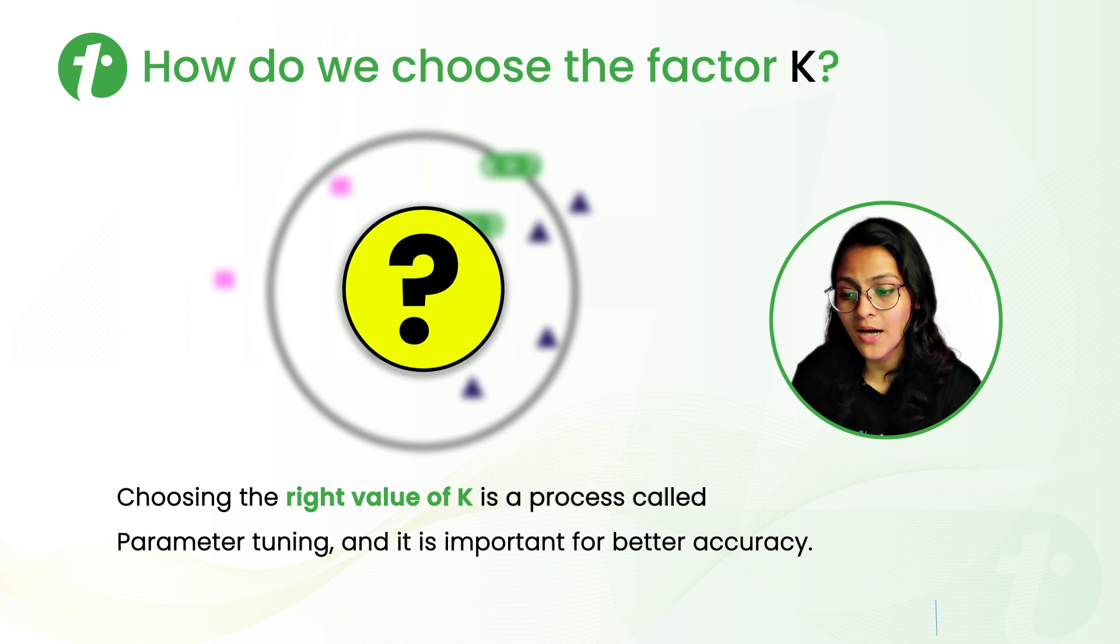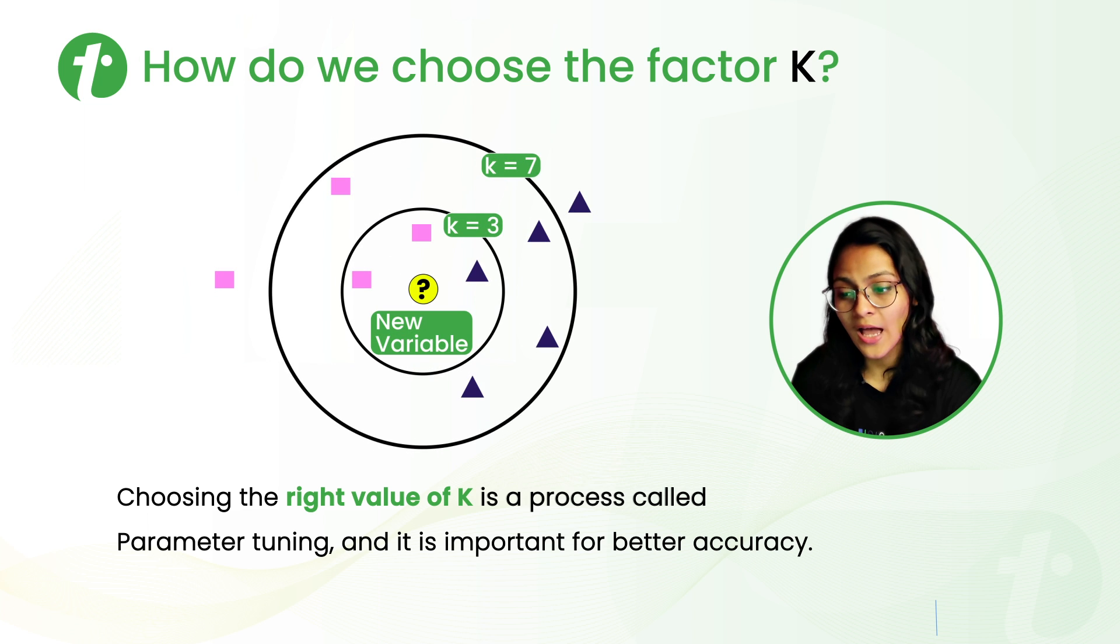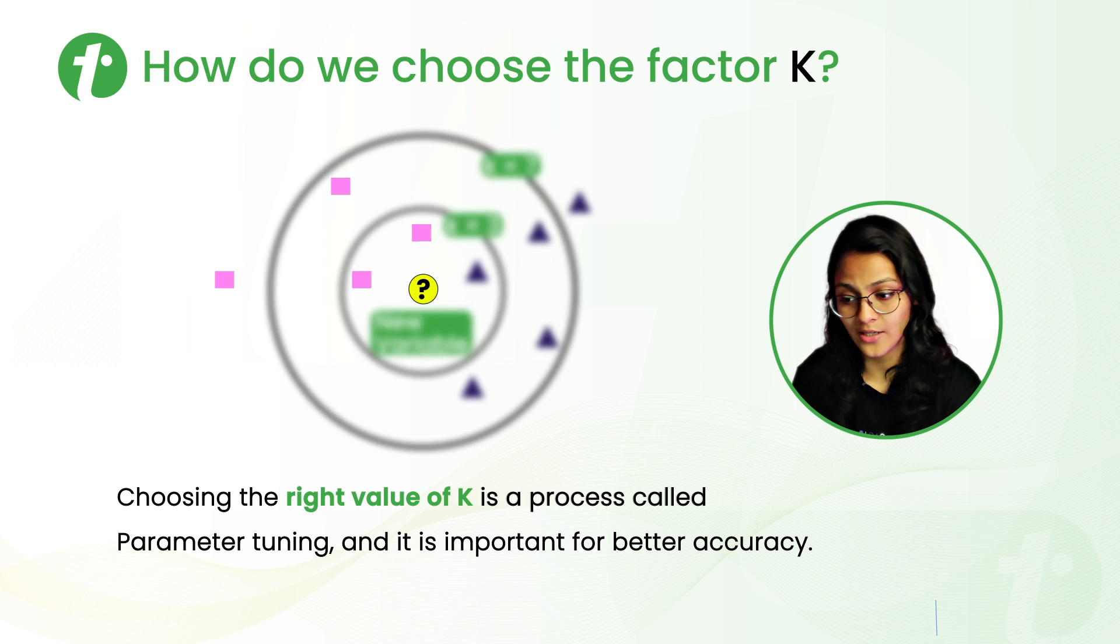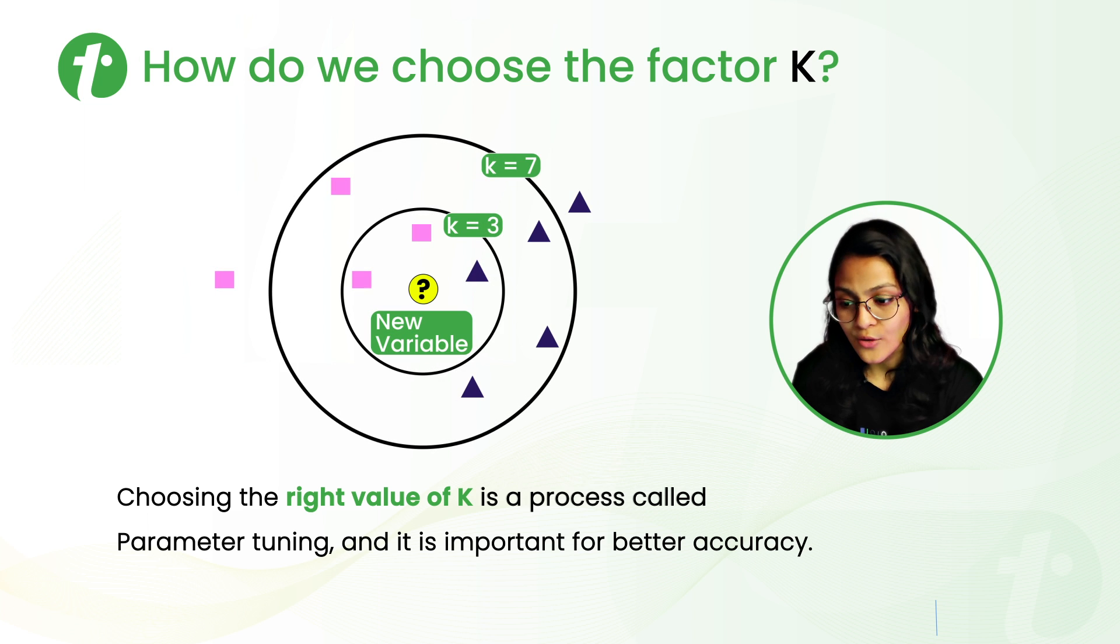Consider this question mark is the new variable. Now we have to predict whether this belongs to the rectangle category or triangle category. If I consider the value of K as 3, then there are two rectangles and one triangle. So in this case, it will belong to the rectangle category.